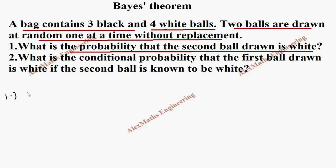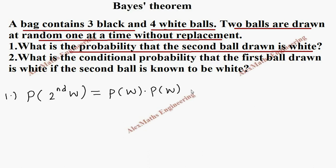So we are looking for P(second white). There are two possibilities: first, we can draw white and then white again — that is one case. Or first we can draw black and then get white on the second draw. These are the two cases for the second ball being white.